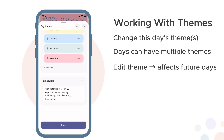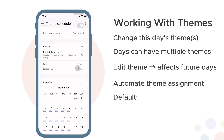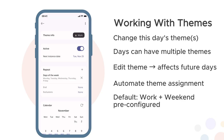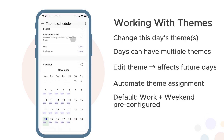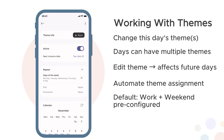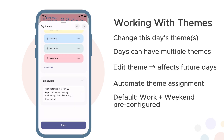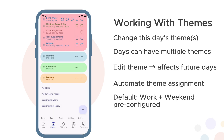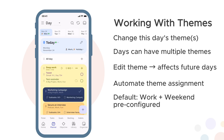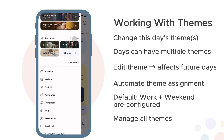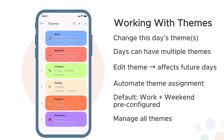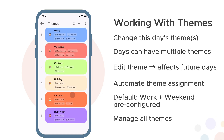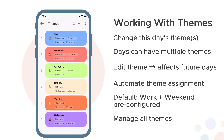At the bottom of the theme view you'll see schedulers. These automate which days get which themes. By default, Journalit sets up work and weekend themes with two schedulers — one applies work to weekdays, another applies weekend to weekends. You can customise these or add more. To see all your themes at once, open the side panel and tap day themes. This shows your complete theme list, where you can create new ones or manage existing themes.